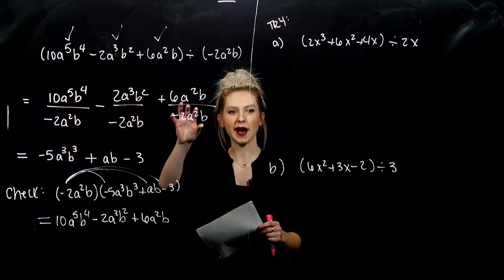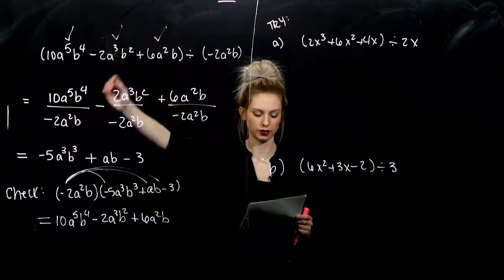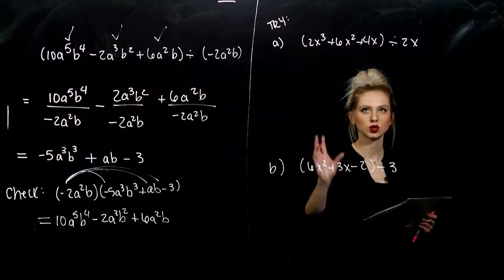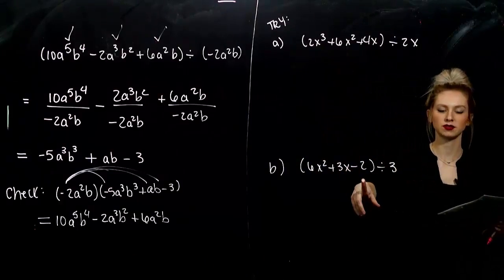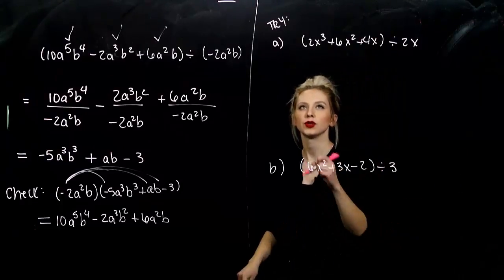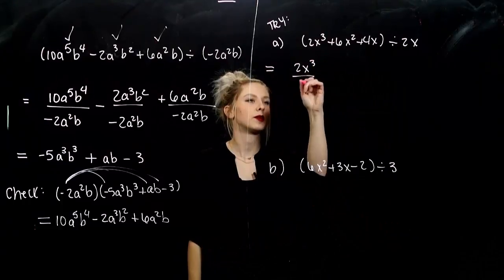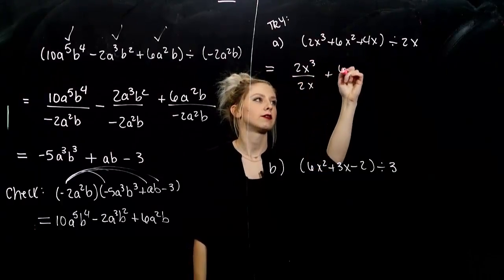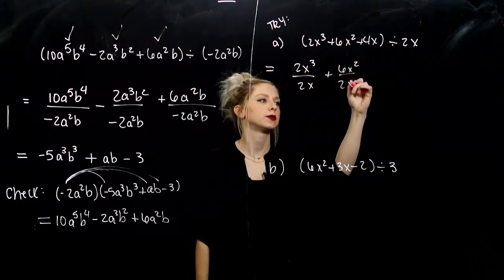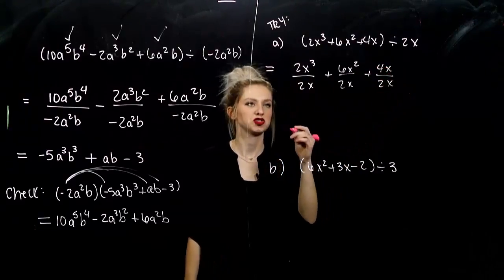You can always check with division by looking at the multiplication. What you divided by, what it's equal to, should give us the original that we started with. So, go ahead and take these two examples. Divide and check them. So, the first one, we can break up individually. Every term divided by 2x. Every term divided by 2x. Every term divided by 2x. Start simplifying.